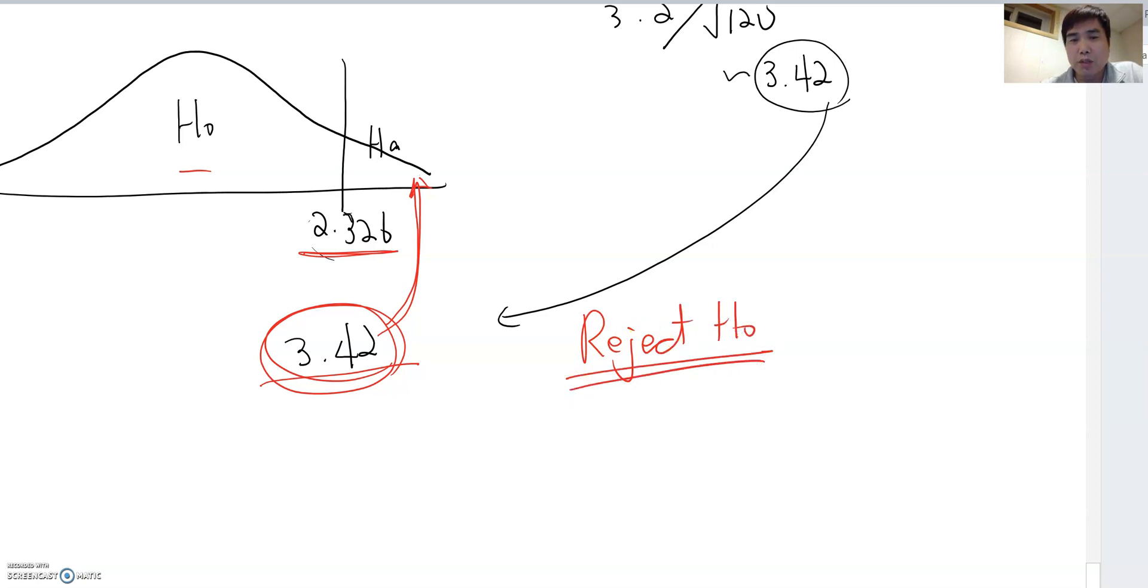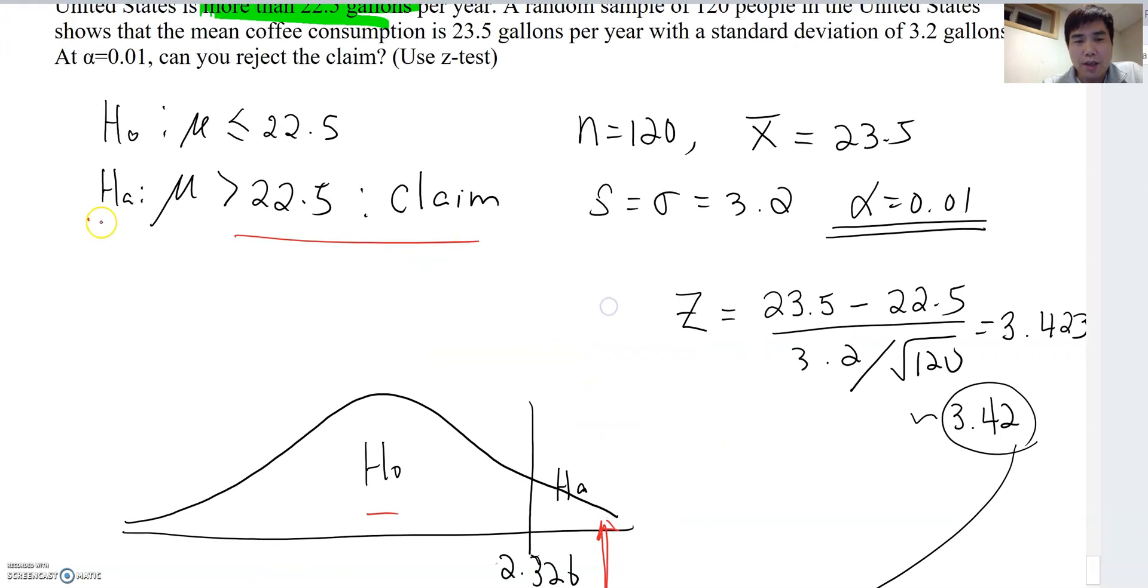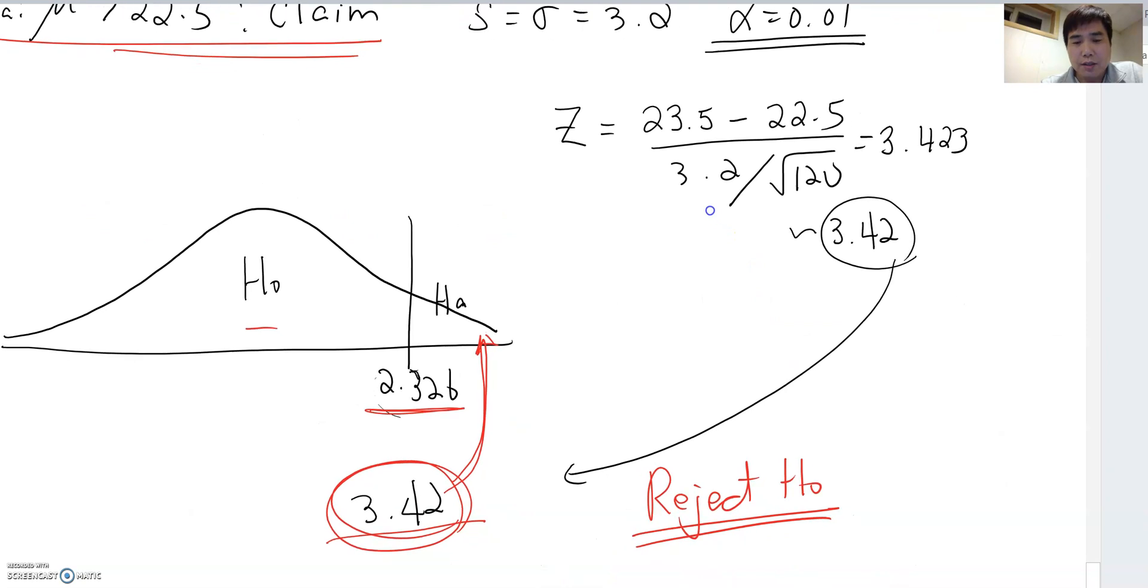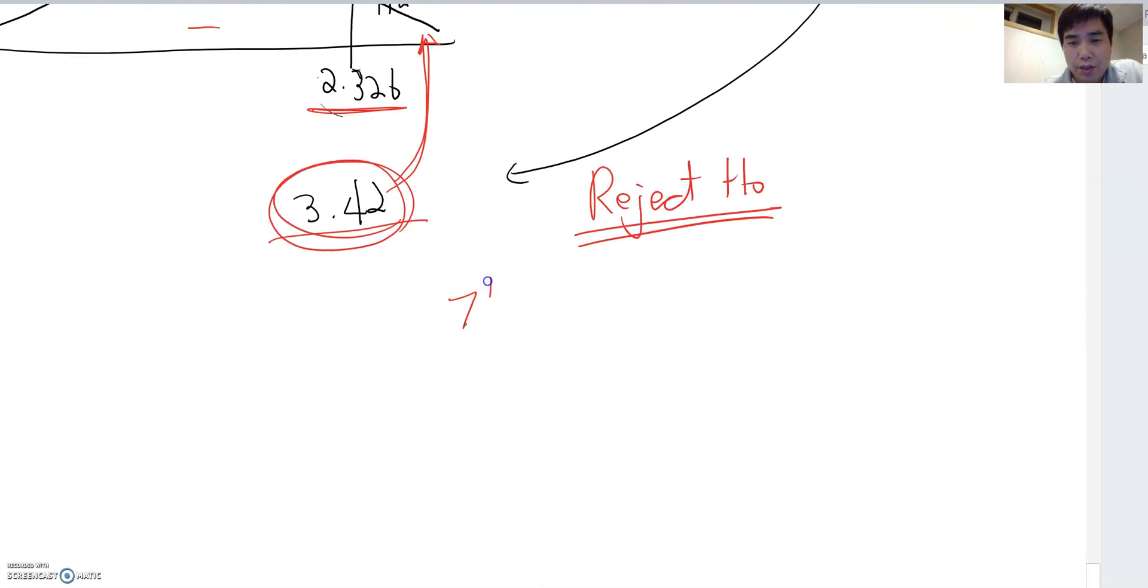Now where was the claim? The claim was on HA. So now we can conclude there is enough evidence to support the claim. So that's the answer for this problem.